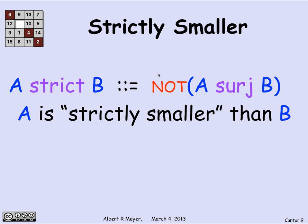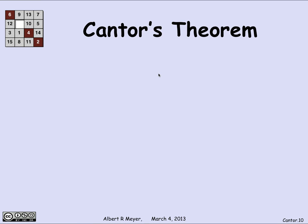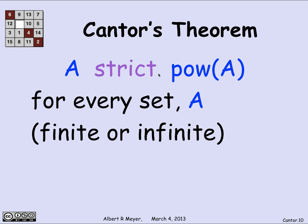Now we come to Cantor's theorem, which is very simple to state. For any set A, A is strictly smaller than the power set of A. More precisely, there is no surjection from A to the power set of A. It doesn't matter whether A is finite or not: if A is empty, the power set of A has one element; if A is finite with n elements, the power set has 2ⁿ elements, and 2ⁿ is always bigger than n. Cantor's observation, by a very simple elegant argument, is that this works even for infinite sets A. Give me a set — its power set is bigger. That's how we keep getting bigger infinities.